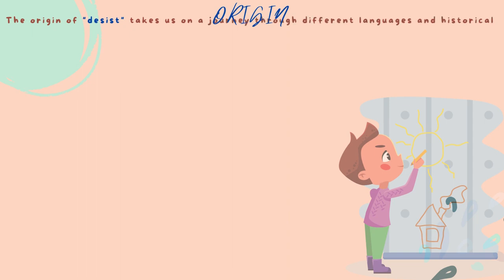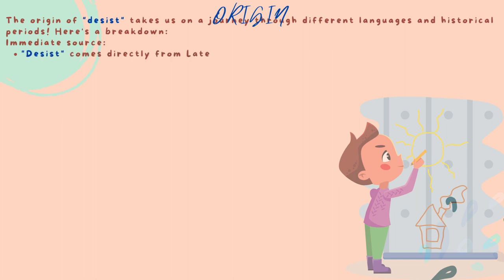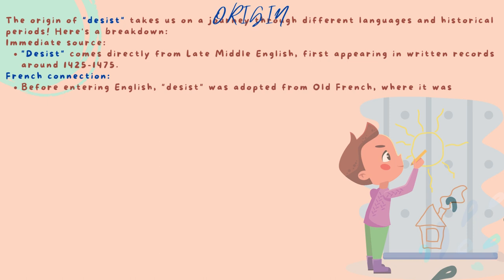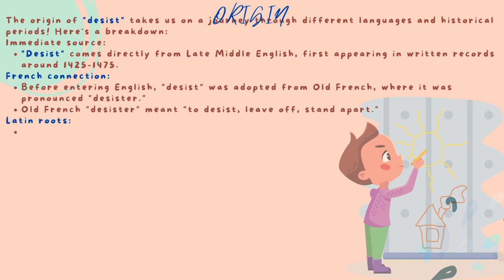The origin of desist takes us on a journey through different languages and historical periods. Here's a breakdown. As an immediate source, desist comes directly from late Middle English, first appearing in written records around 1425 to 1475.